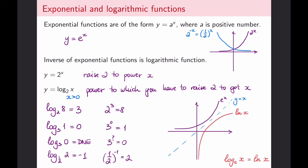Notice a couple of very important points. For the exponential function, the y-intercept is always at 1, because anything raised to power 0 produces 1. That means this point gets transferred to the logarithmic function as the x-intercept of 1. And that is because raising anything to power 0 will always produce 1.